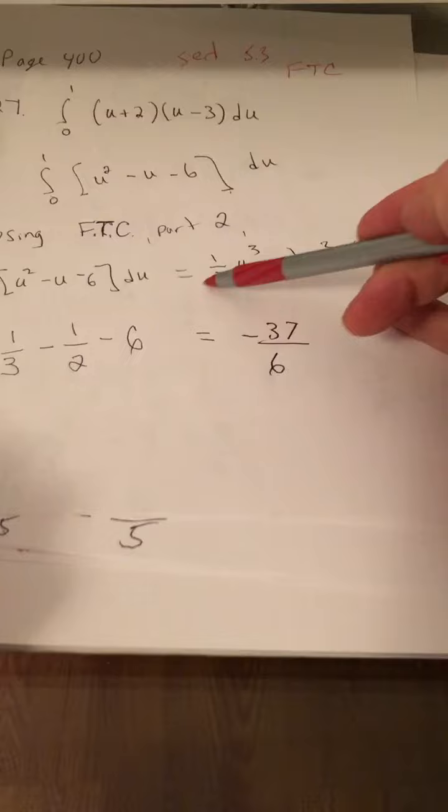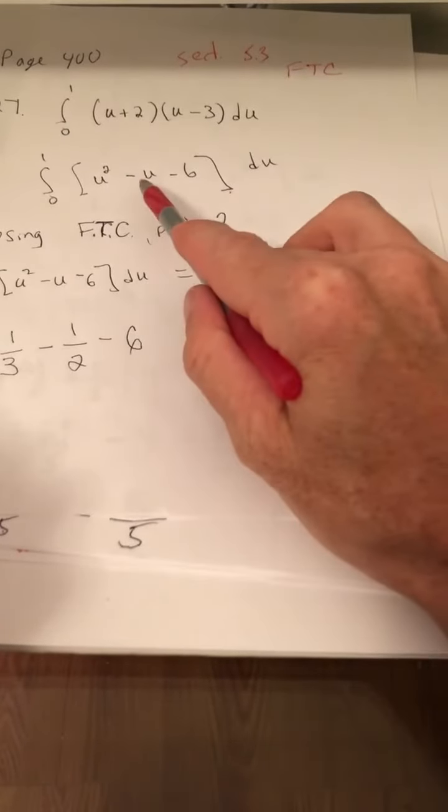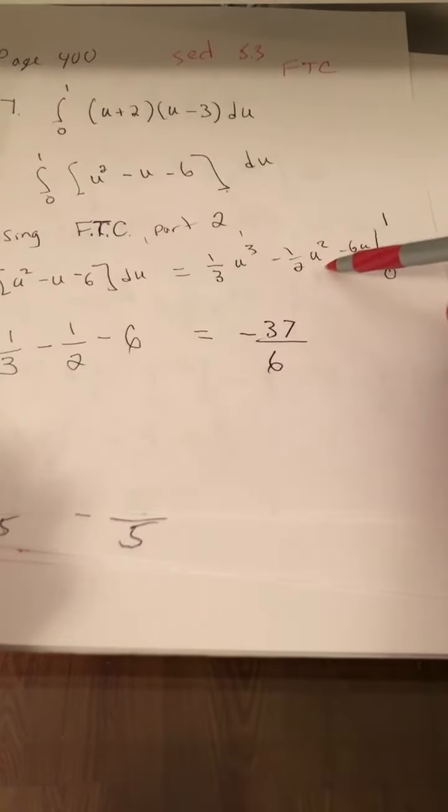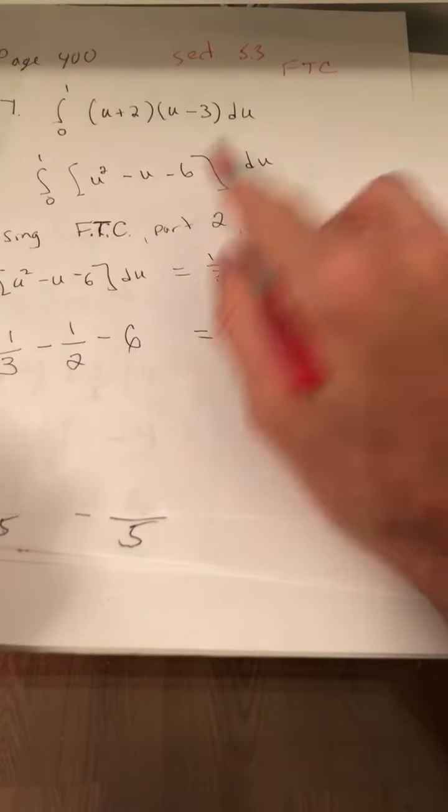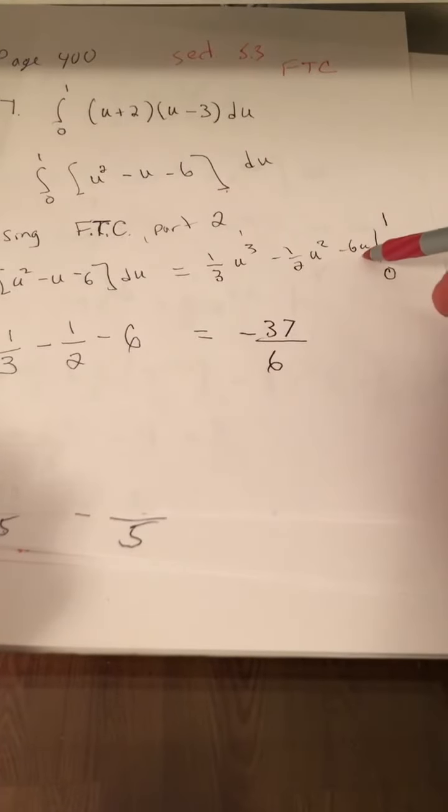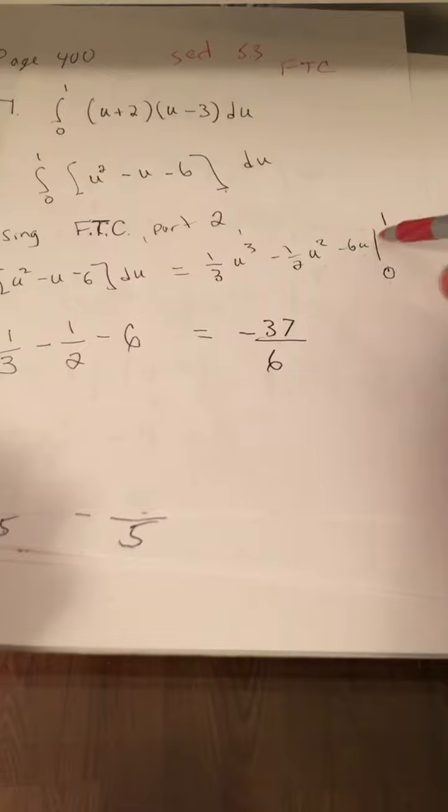An antiderivative of u squared is one-third u cubed. An antiderivative of minus u is minus one-half u squared. An antiderivative of minus 6 is negative 6u. And our limits are 0 and 1.